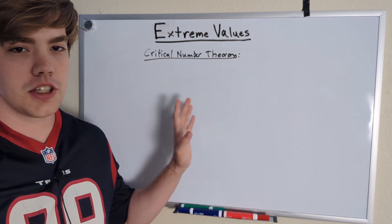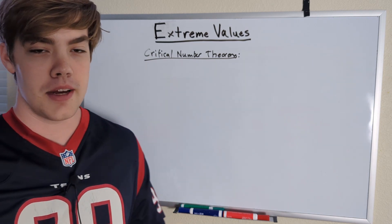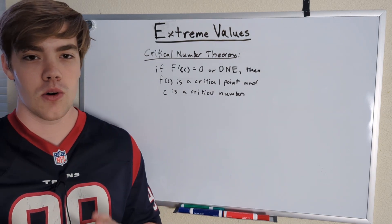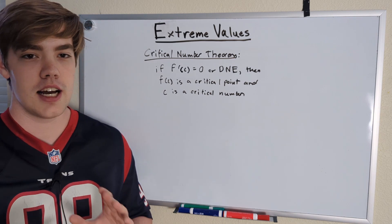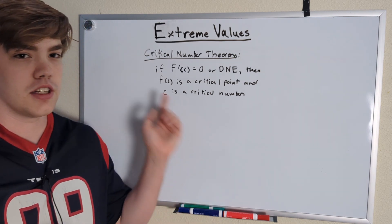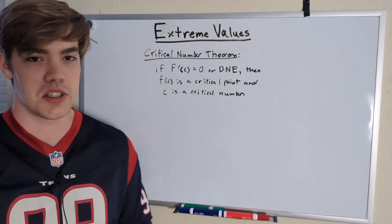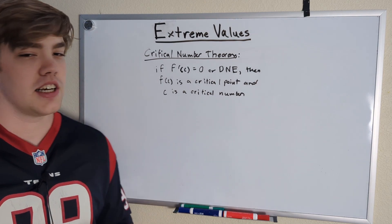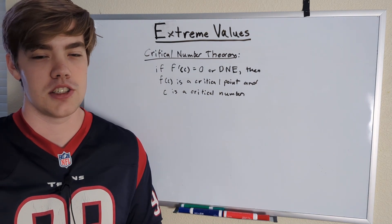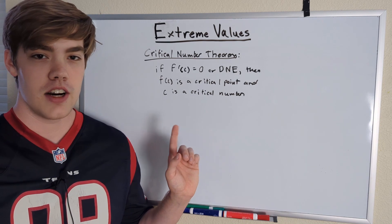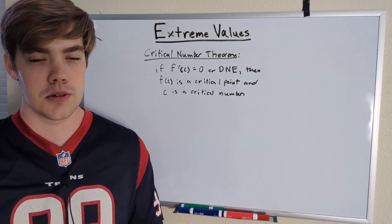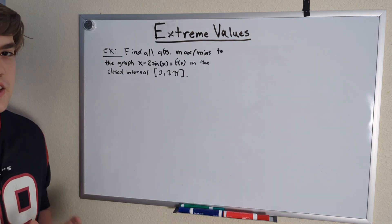We're going to talk about one more theorem: the Critical Number Theorem. It states the following: if F prime of C is equal to zero or doesn't exist, that point is a critical point — which is what we were just talking about. This theorem also tells us that C is called a critical number. This theorem is simple but very important when talking about extreme values.